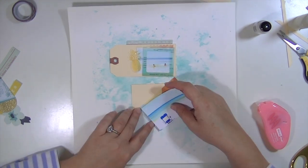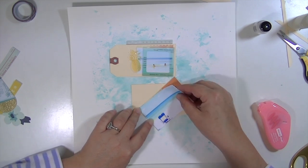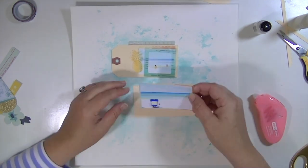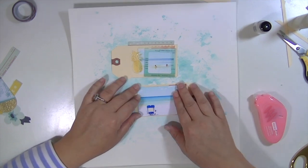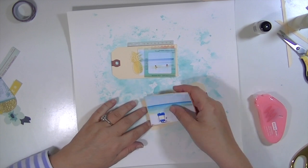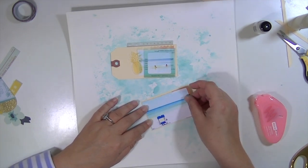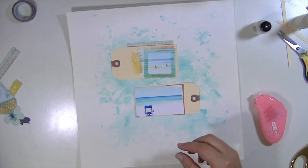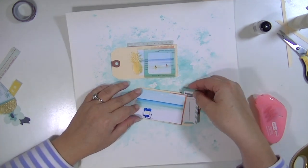That blue and yellow and orange paper is half of one of the four by six project life cards from the project life kit. The other half of it has a little flamingo on it and I just cut it into two three by fours. I can still use the other side but this one I really wanted to use to mount that photograph.